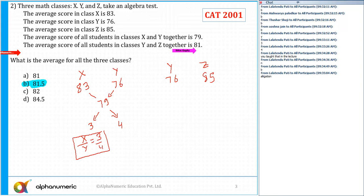So I can say 85 minus 81 is 4, and 81 minus 76, that is equal to 5, which means the ratio of the number of students in class Y and Z is 4 by 5.